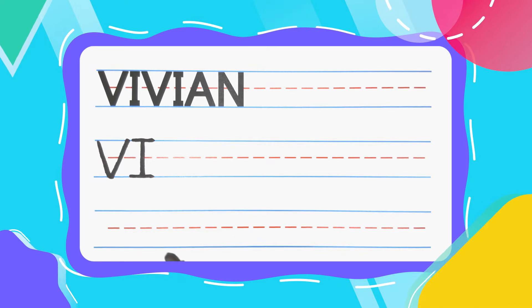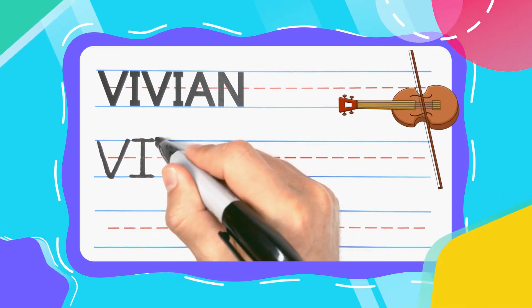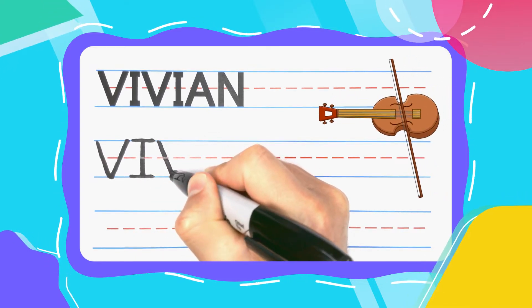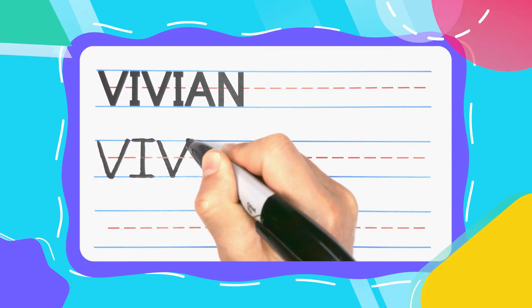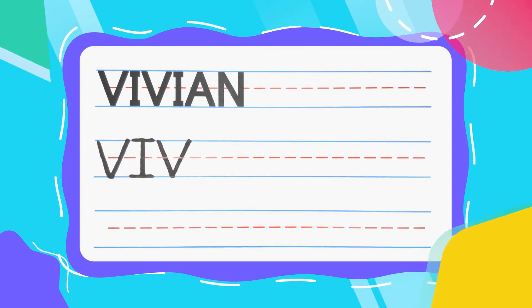The next letter in Vivian is another violin V. Diagonal down, diagonal right back up, and you've just drawn your second V.